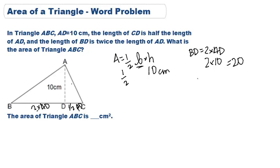Now DC is equal to one half of AD. AD is still 10, and half of 10 is 5. 20 plus 5 gives us 25. So our base is 25.